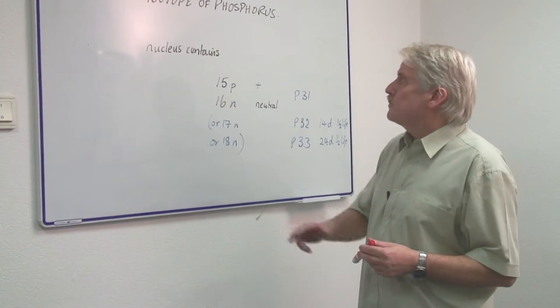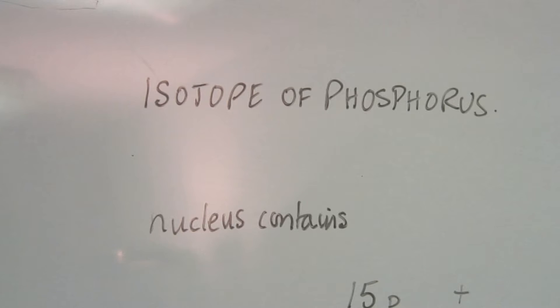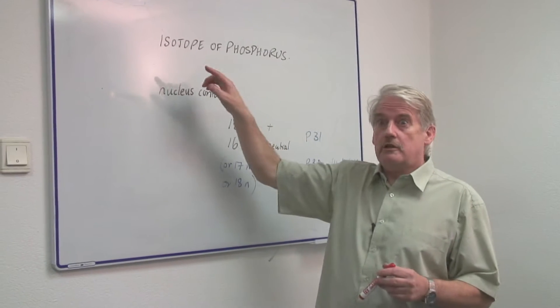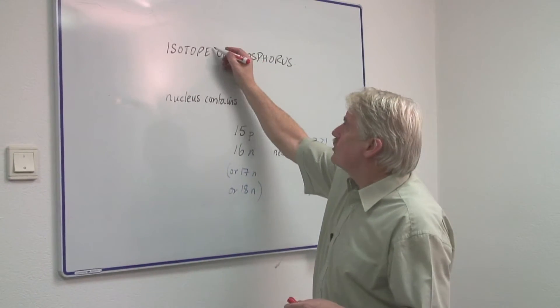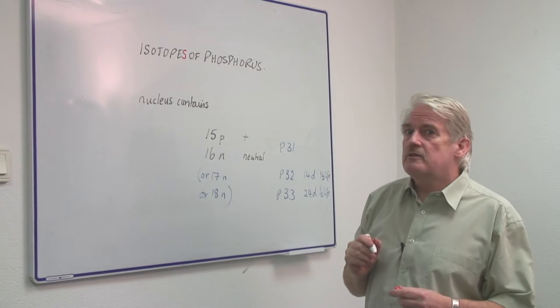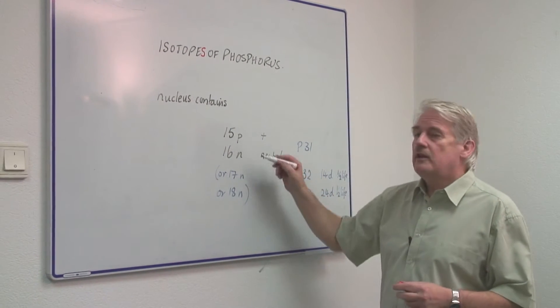Hi, I'm Steve Jones and I'm going to tell you about the isotopes of phosphorus. Or should I say actually, isotopes of phosphorus, because there isn't one, there are actually three.